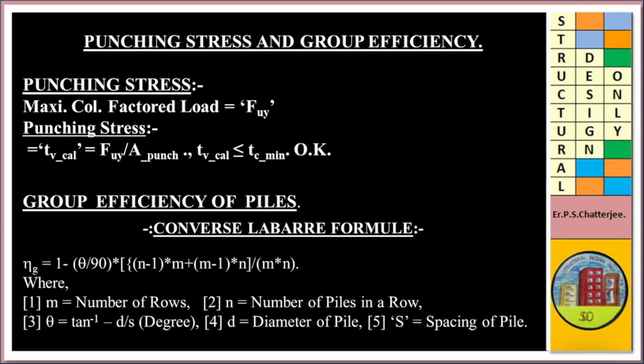Punching stress and group efficiency. Maximum punching stress below column factor: Tau_v_cal shall be less than or equal to Tau_c minimum — then it is OK. Group efficiency using the Converse-Labarre formula: mu_g = 1 − (theta/90) × [(n−1)×m + (m−1)×n] / (m×n), where m = number of rows, n = number of piles in a row, theta = tan⁻¹(d/s) in degrees, d = diameter of pile, s = spacing of pile.